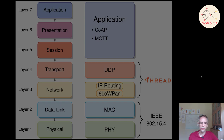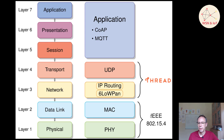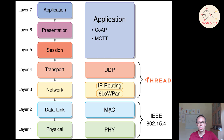Let's compare Thread with the OC reference model. The two lower layers — the physical and the MAC layer — are defined by the IEEE 802.15.4 standard. The physical layer defines the modulation and how signals are coded to reach another module. The MAC layer adds addressing so you can directly send a message to a device in range. Security is also implemented here, but there is no routing mechanism, which is where Thread comes in.